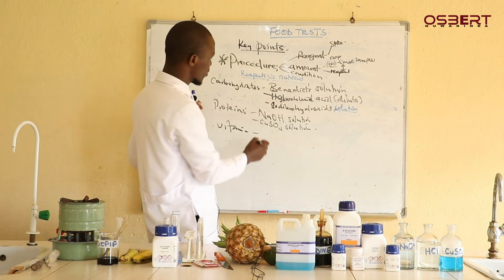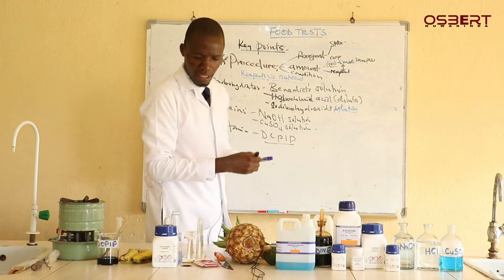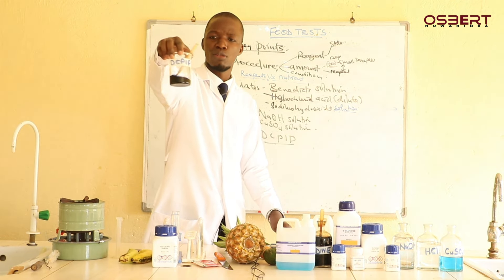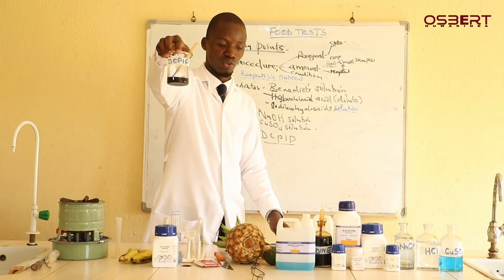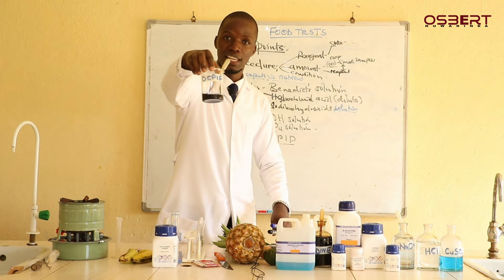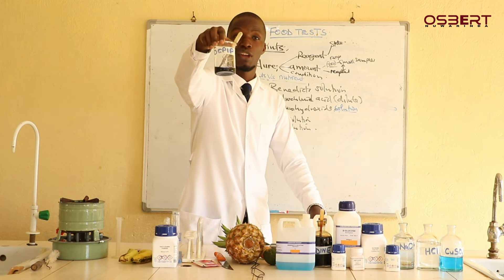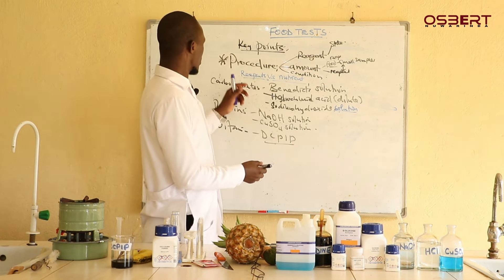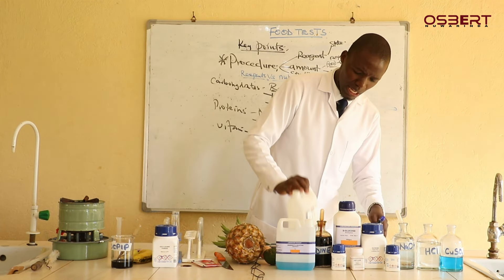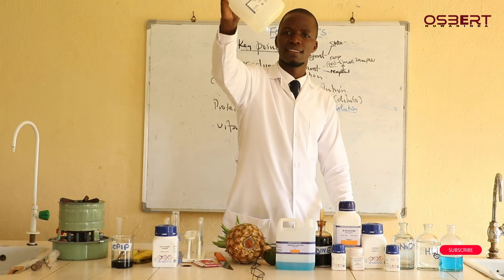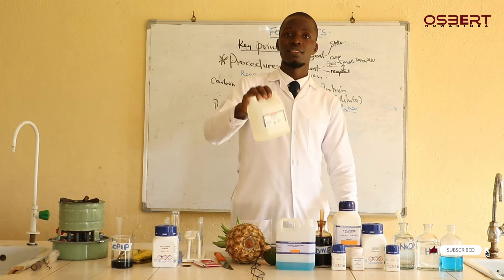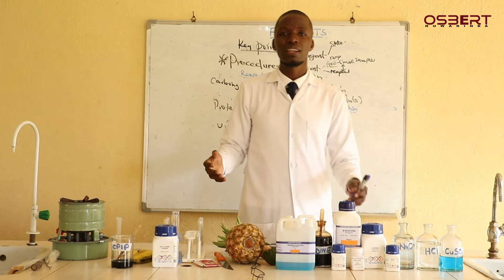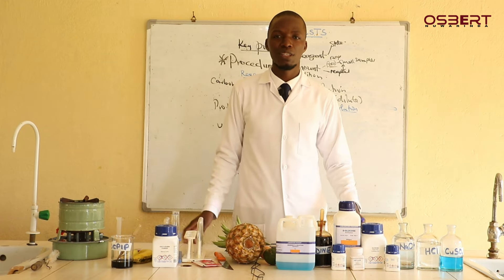For vitamins, we use a reagent known as DCPIP. DCPIP solution is here in front of us — it is also blue, but a deep blue compared to copper II sulfate and Benedict's solution. We also have DCPIP in powder form. For lipids, we use ethanol — I have ethanol here, it is colorless, 97% pure ethanol. We also use distilled water.